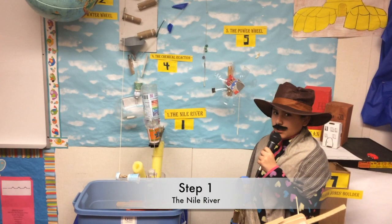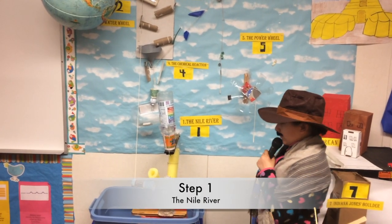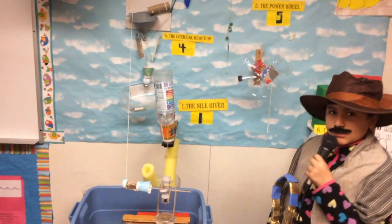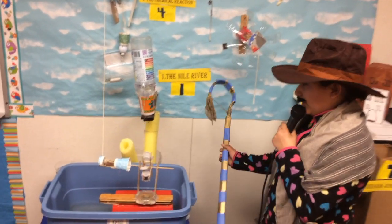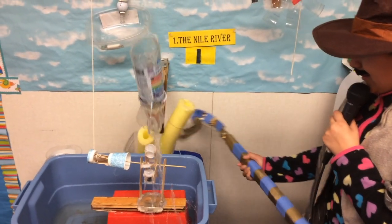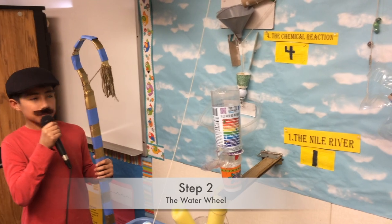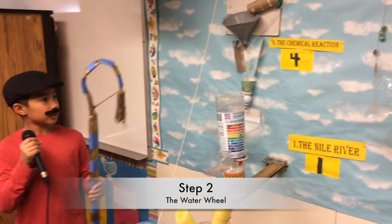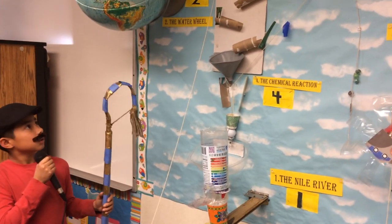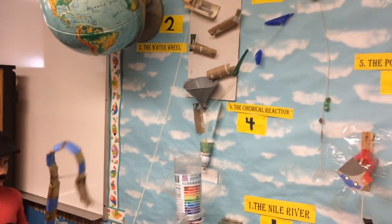Step 1: The Nile River. The lever will be pulled, releasing water onto the water wheel. Step 2: The water wheel. The water wheel will pull the string and release the ball of mercury.